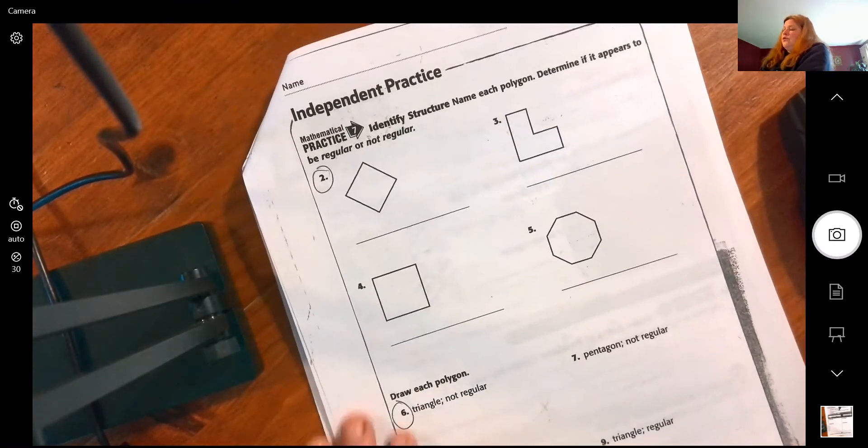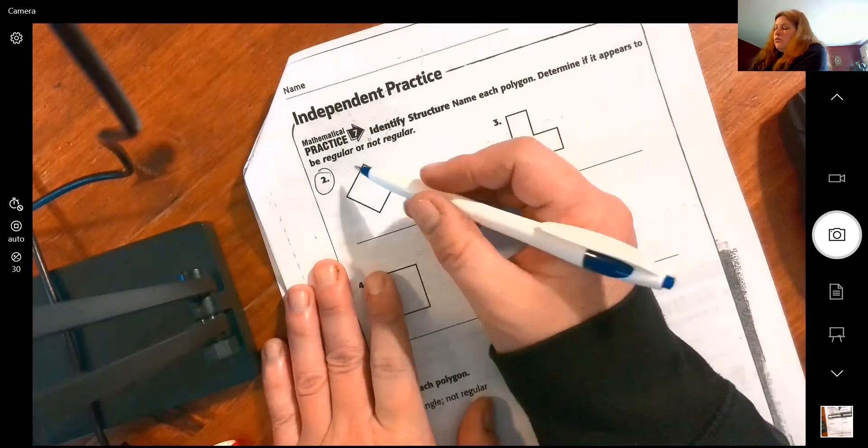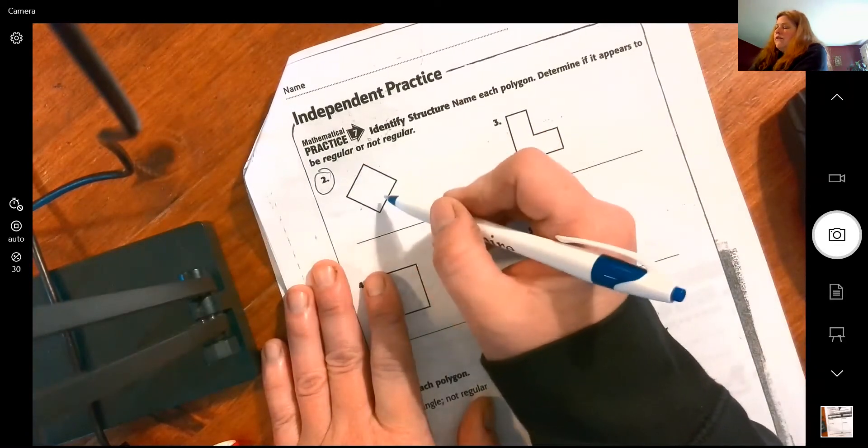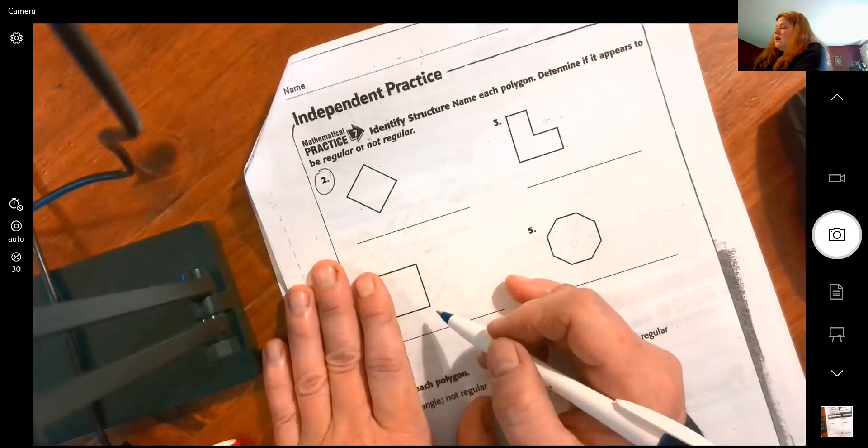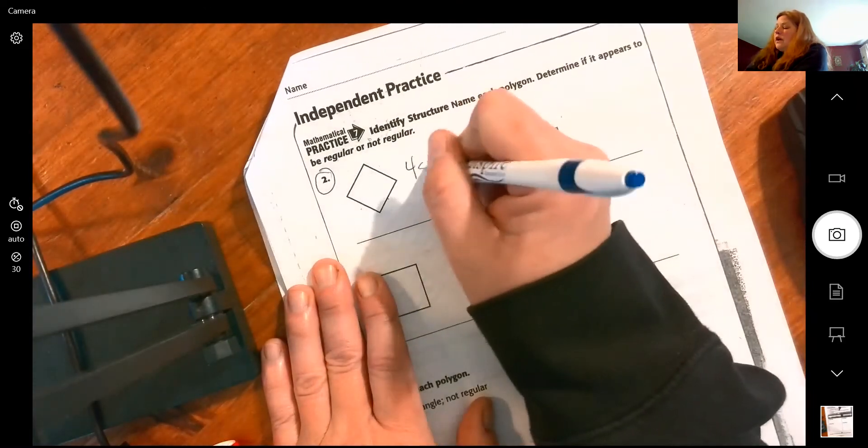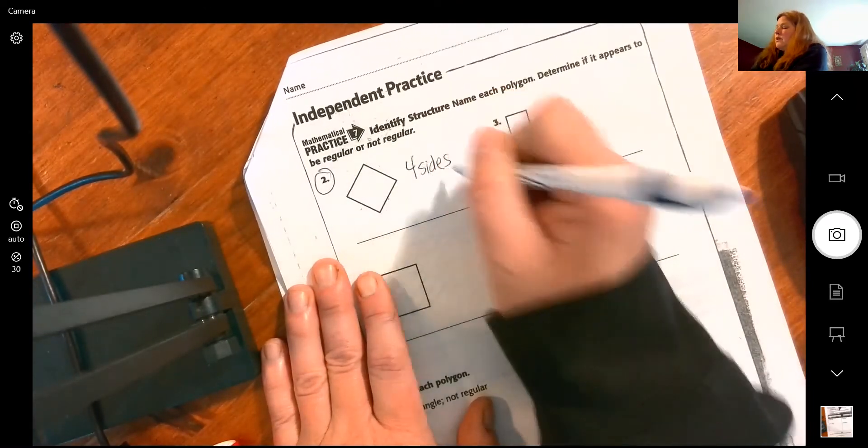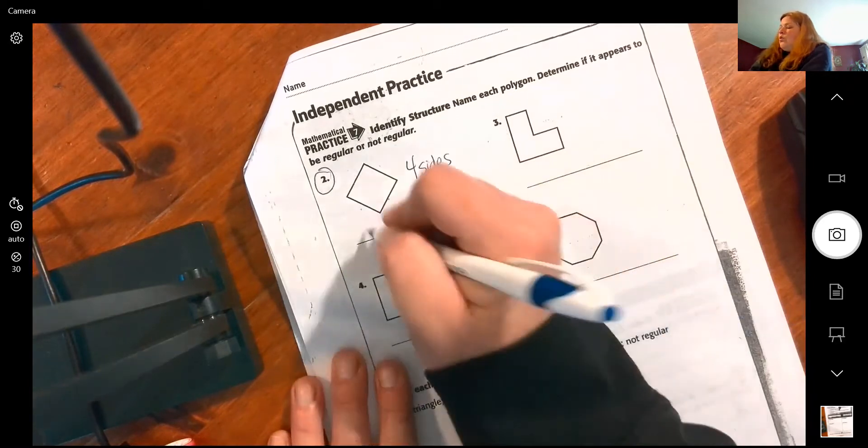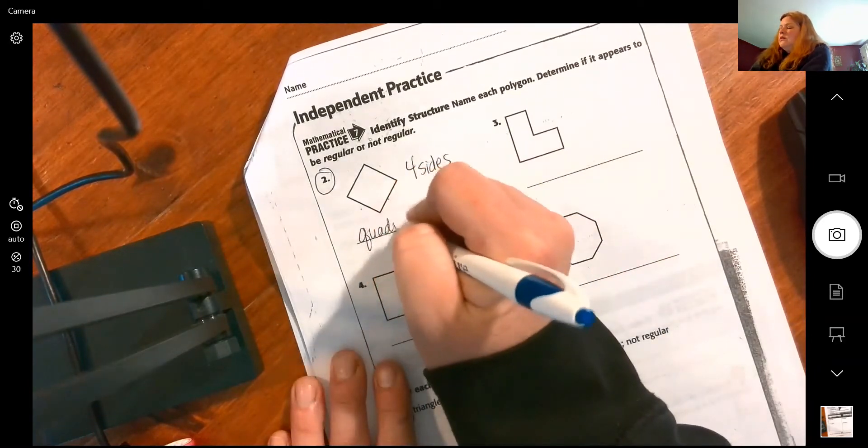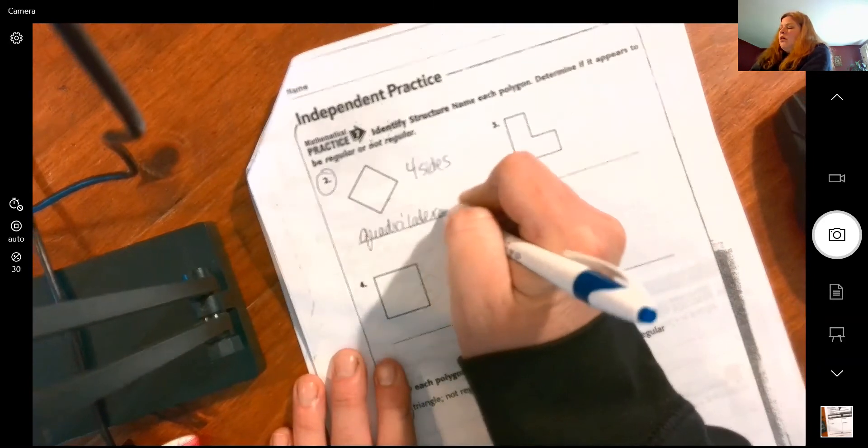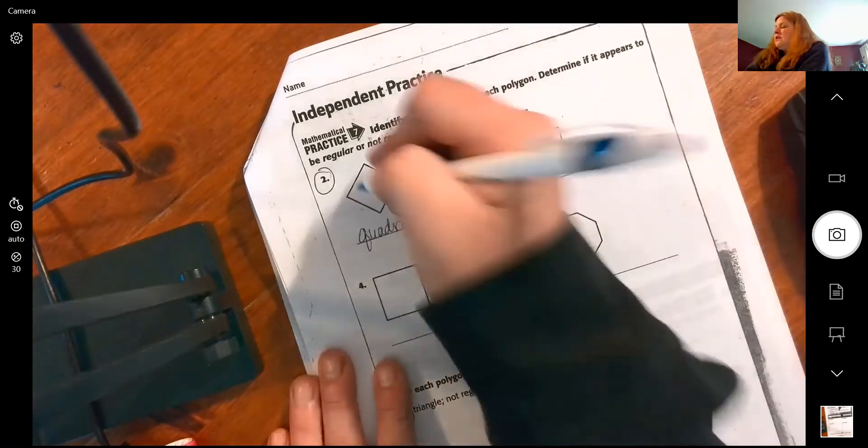So first off, how many sides does it have? One, two, three, four. If it has four sides, what do we call it? Don't tell me it's a diamond, that's a kindergarten term. Quadrilateral.